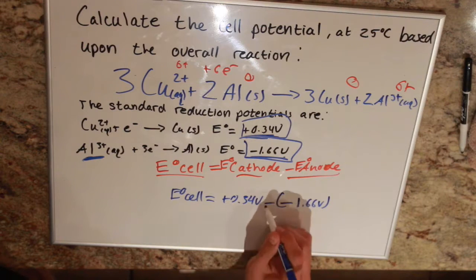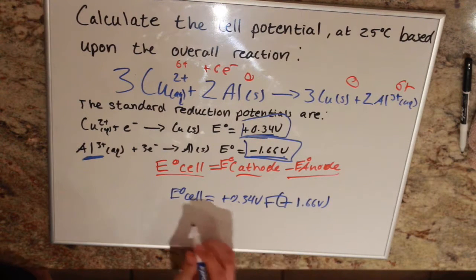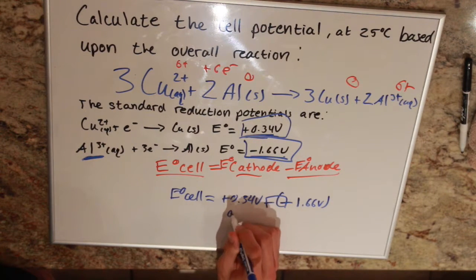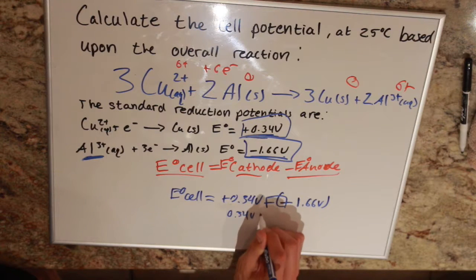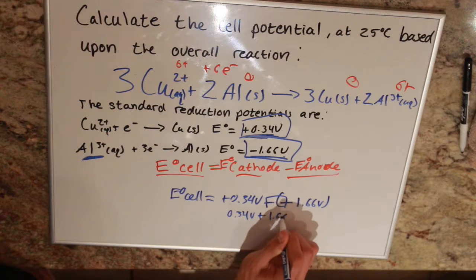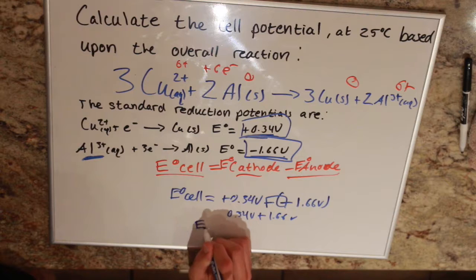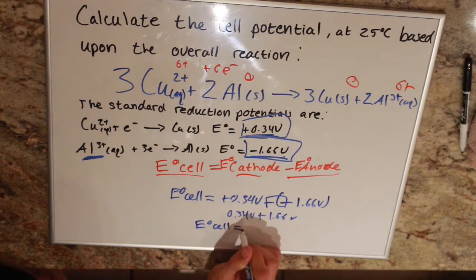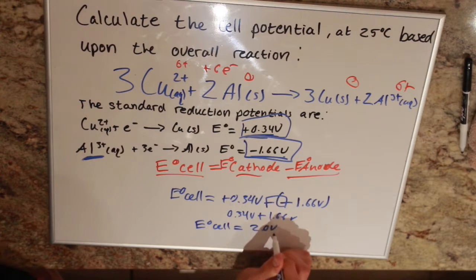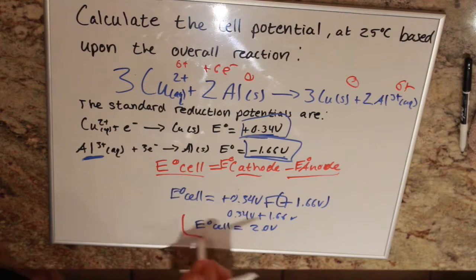Minus minus can be a positive, so we're going to have 0.34 plus 1.66 volts, and that gives us a cell potential of 2 volts. That's your answer.